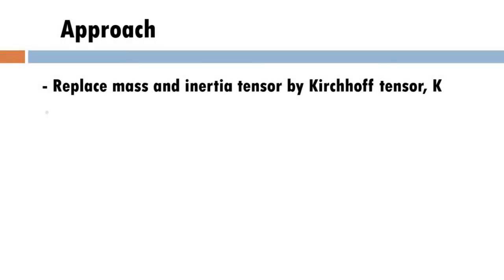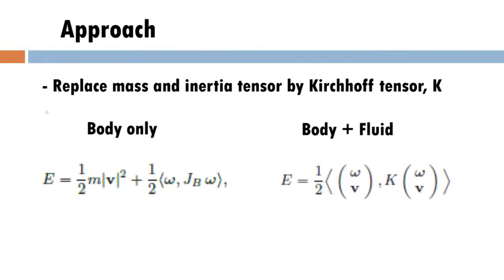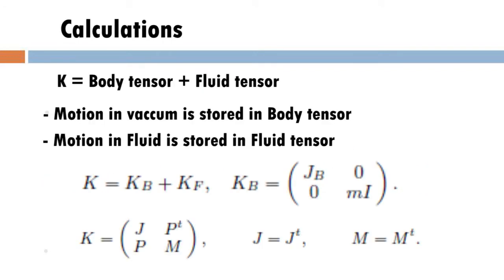In our approach, we will attempt to simulate a rigid body immersed in a fluid medium without simulating any fluid particles, as per the equation on the screen. In this equation, K represents the Kirchhoff tensor. The simulation depends mainly on the correct computation of the Kirchhoff tensor K, which is essentially the sum of the body tensor KB and the fluid tensor KF. Every rigid body's properties in vacuum will be described by a unique Kirchhoff tensor represented by KB.